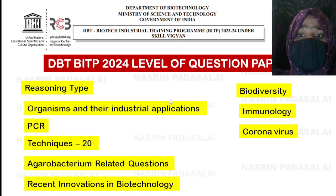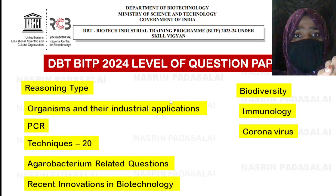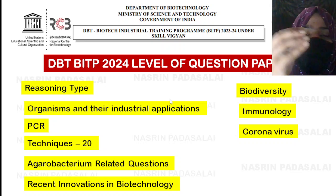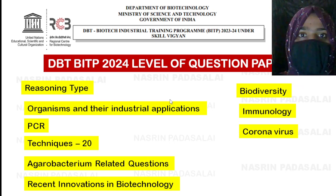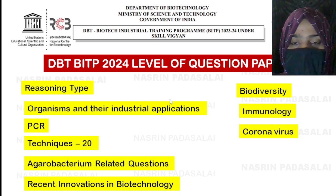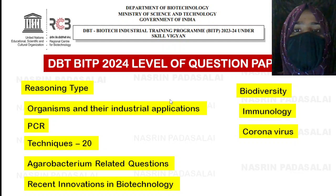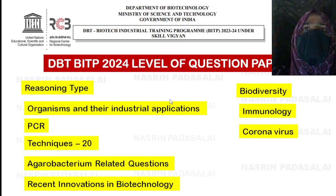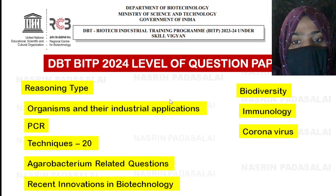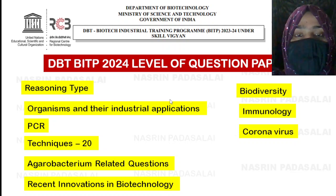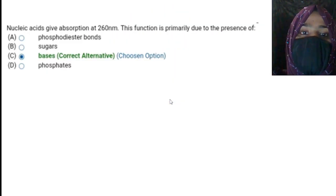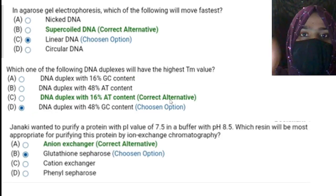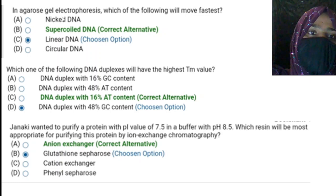Immunology is a favorite topic and the questions asked are very simple — please study it. One question came from autoimmunity, one from immune cells, one from transplantation, and one from MHC. They ask simple things like what is an isograft. Coronavirus is also important — two questions came from coronavirus: one regarding the genome and one regarding the vaccine. Sometimes they ask which company manufactured the vaccine, so study about Covishield and Covaxin.